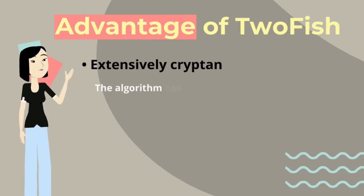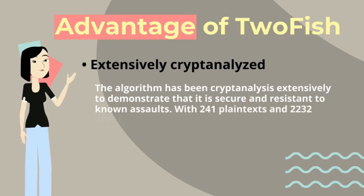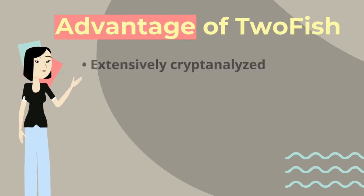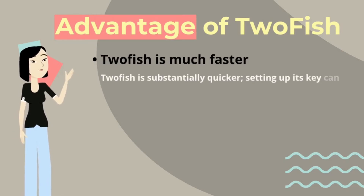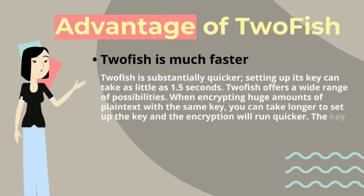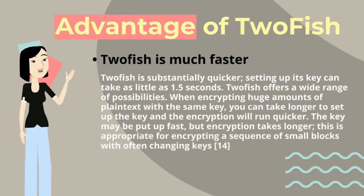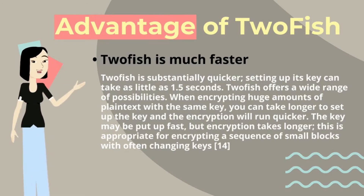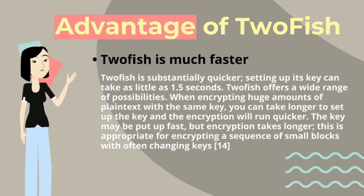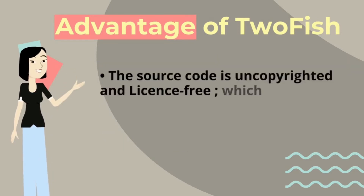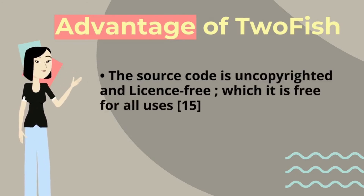TwoFish has been extensively cryptanalyzed to demonstrate that it is secure and resistant to known attacks. With 2^41 plaintexts and 2^232 operations, the designers were able to conduct an attack on only six rounds. TwoFish is also much faster — setting up its key can take as little as 1.5 seconds. TwoFish offers flexibility: when encrypting large amounts of plaintext with the same key, you can take longer to set up the key and encryption runs faster; alternatively, the key may be set up quickly but encryption takes longer, which is appropriate for encrypting small blocks with frequently changing keys. TwoFish source code is uncopyrighted and license-free, making it free for all users.